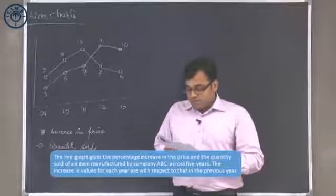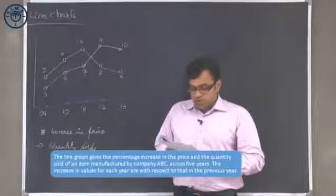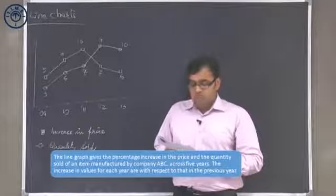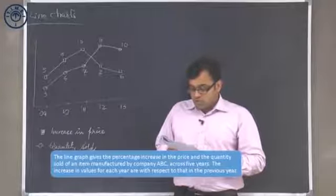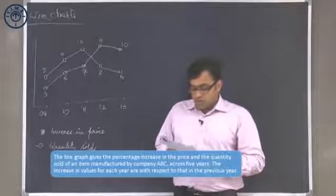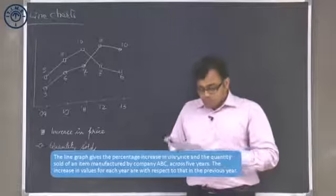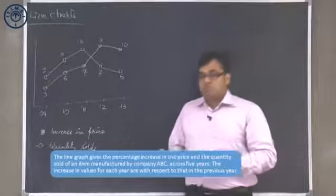The line graph gives the percentage increase in price and the quantity sold of an item manufactured by company ABC across five years. The increase in values for each year are with respect to that in the previous year. On the basis of this, there are four questions that we have to answer.